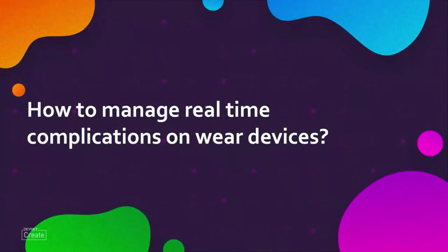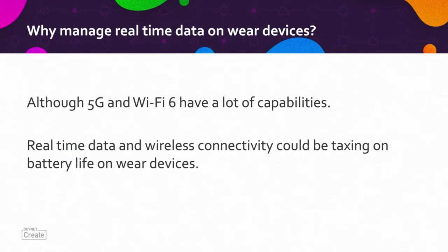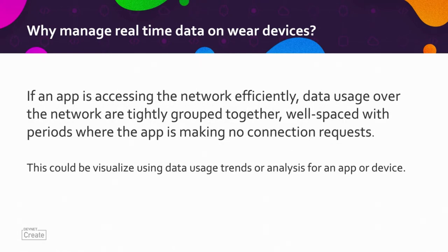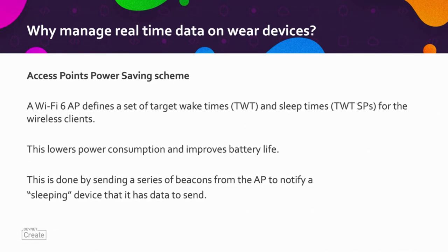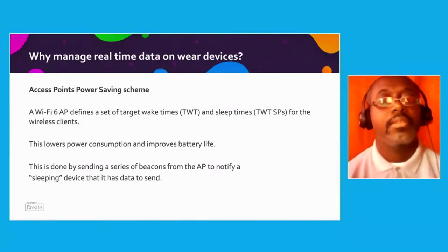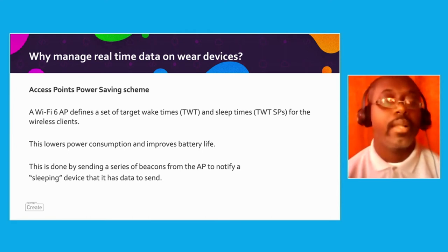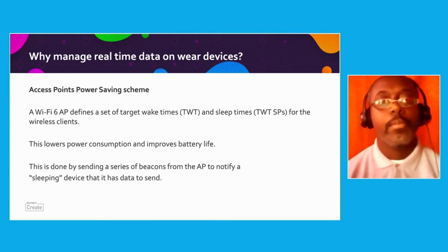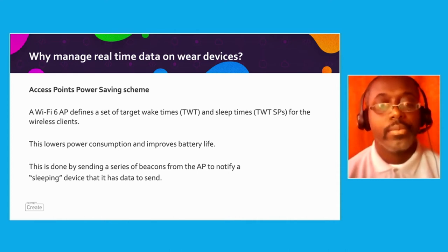Now let's talk about how to manage real-time complications on wearable devices. Although 5G and Wi-Fi 6 have a lot of capabilities, real-time data and wireless connectivity could be taxing on battery life on wearable devices. If an app is accessing the network efficiently, you can visually see data usage over the network are tightly grouped together, well-spaced with periods where the app is making no connection requests. An access point power saving scheme is where a Wi-Fi 6 access point defines a set of target wake-up times and sleep times for the wireless clients, lowering power consumption and improving battery life. This is done by sending a series of beacons from the access point to notify a sleeping device that it has data to send.